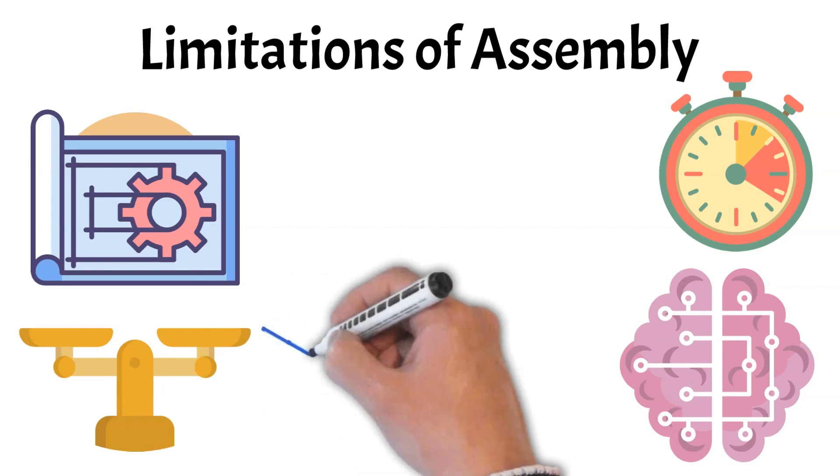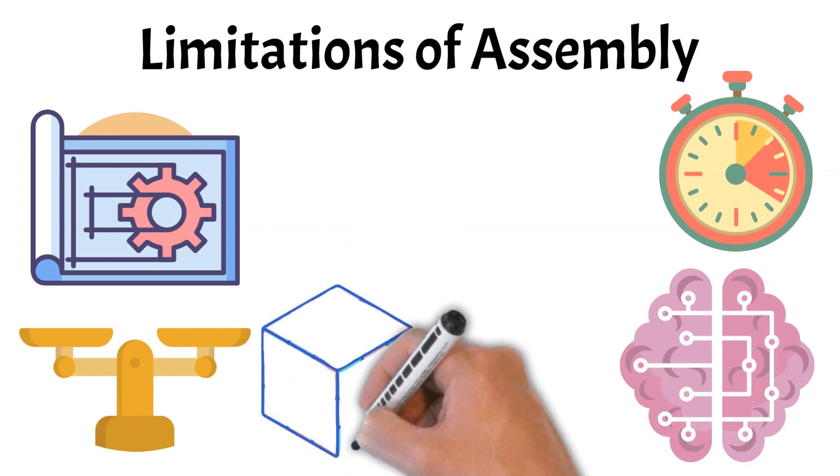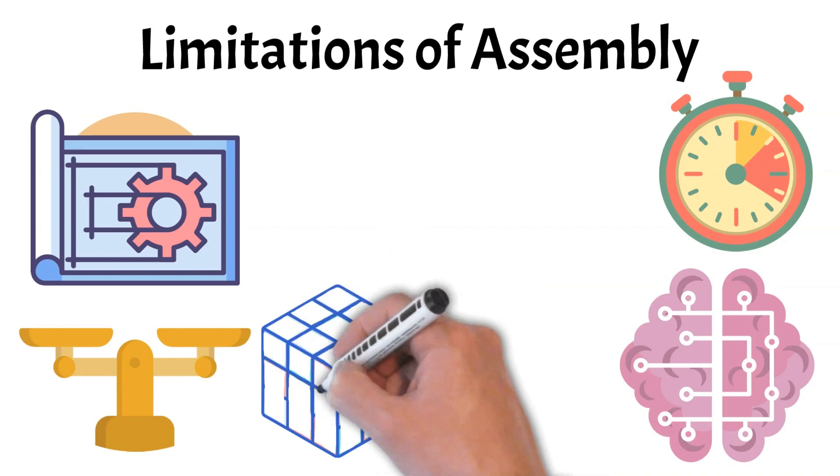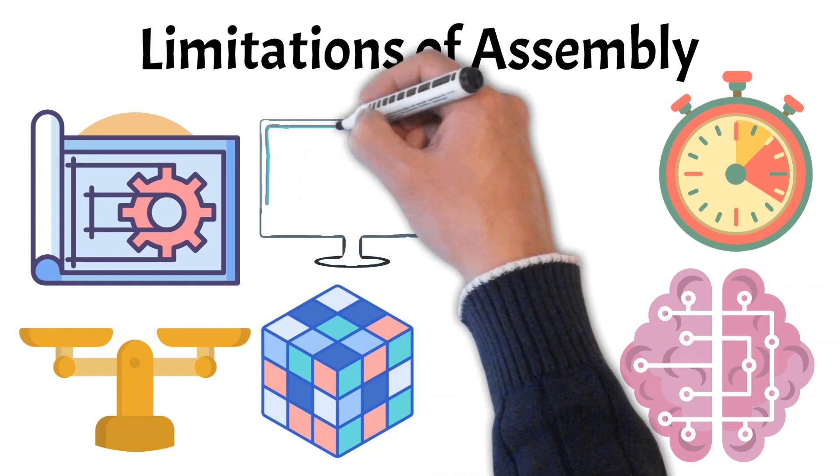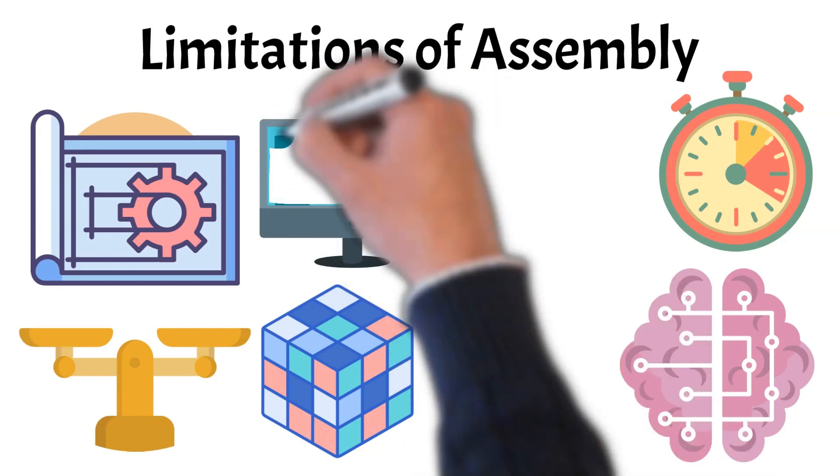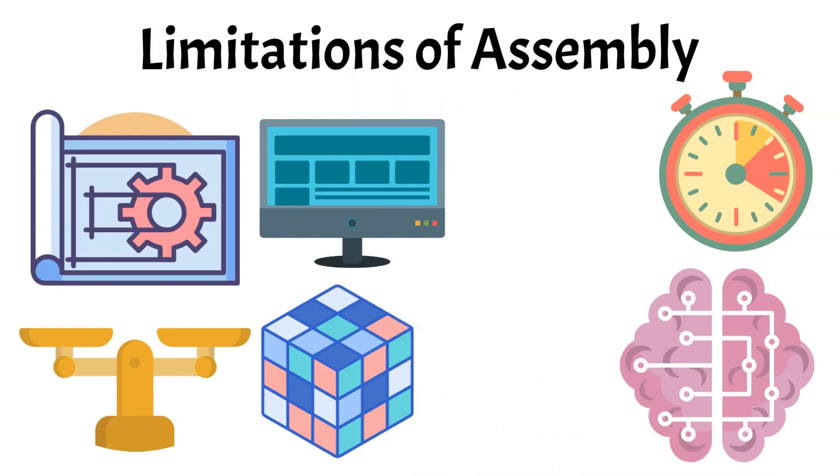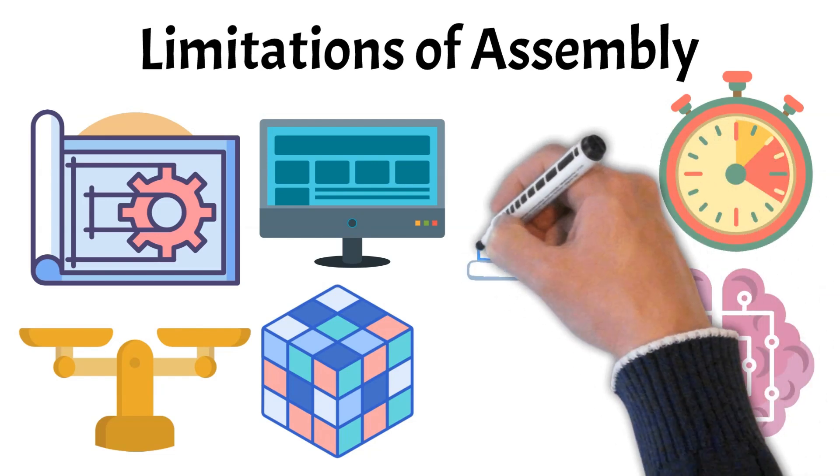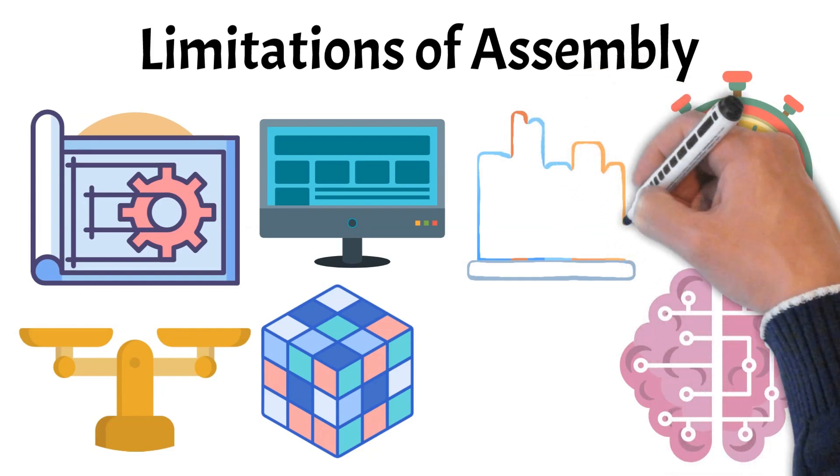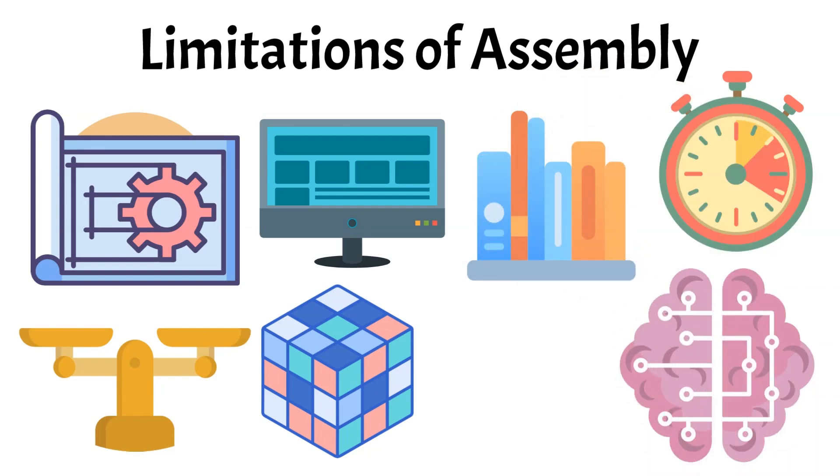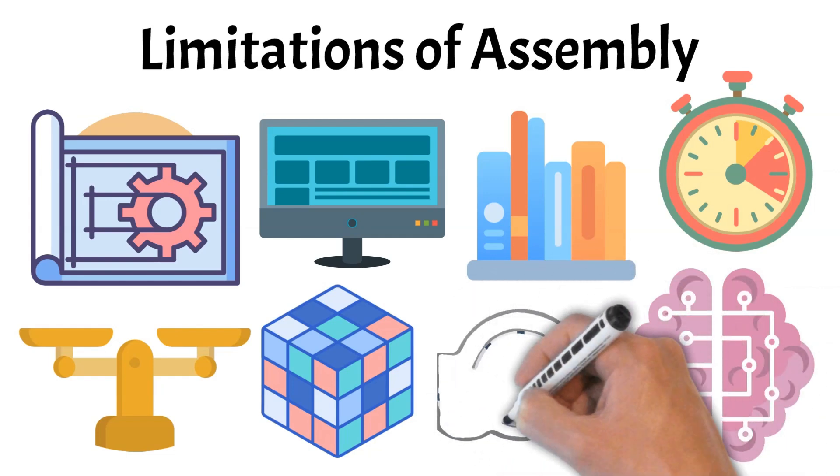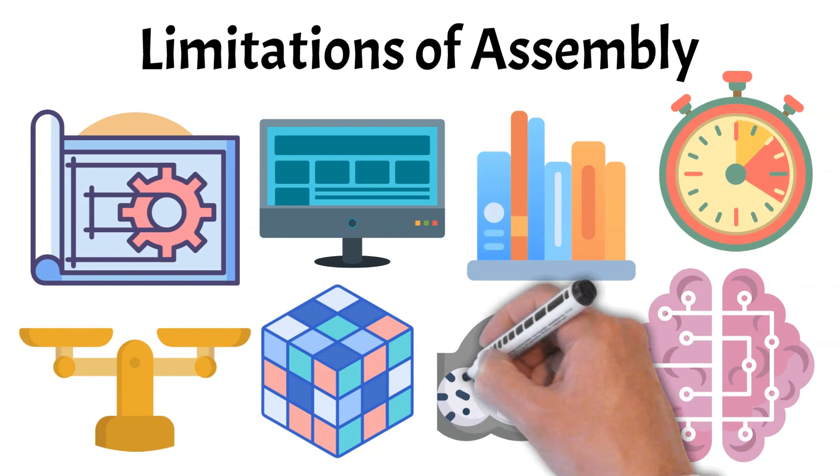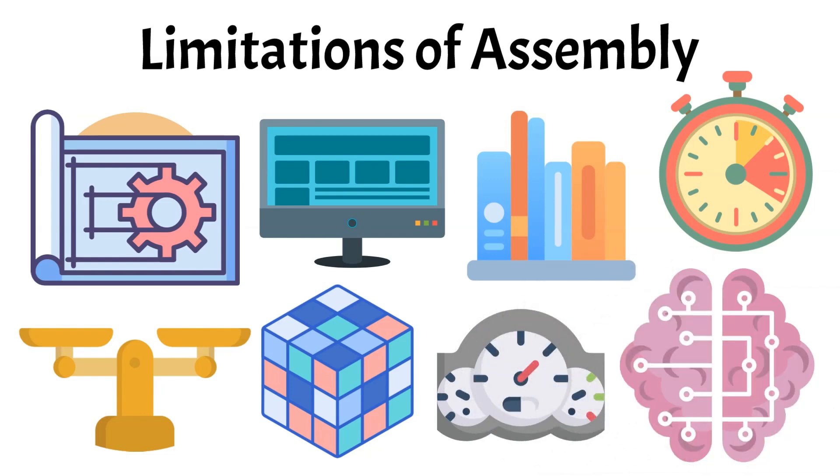Additionally, assembly is not portable. Code written for one architecture typically cannot run on another without significant modifications. This lack of portability makes assembly less suitable for large-scale software development, where flexibility and maintainability are essential. Furthermore, assembly lacks the rich libraries and built-in features available in high-level languages, limiting its use in modern software applications. Overall, while assembly is powerful for specific tasks, its limitations can hinder productivity and adaptability in the fast-paced world of software development.